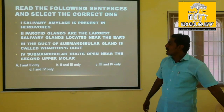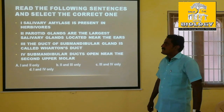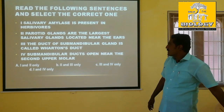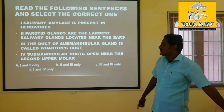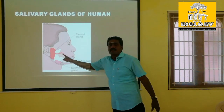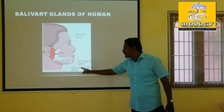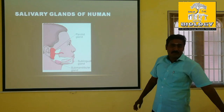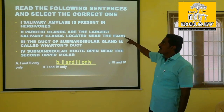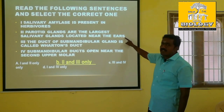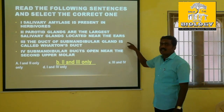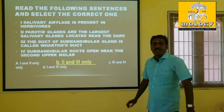The fourth option states that the parotid ducts open near the second upper molar — that is wrong. If you look at the diagram, it opens near the upper second molar. The submandibular duct opens near the upper molar — but that statement is wrong. So in this question, the correct options are second and third: the largest salivary gland located near the ears, and the duct of the submandibular gland called Wharton's duct. So two and three are the only correct ones.